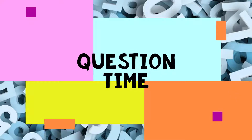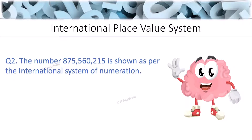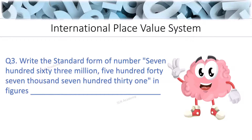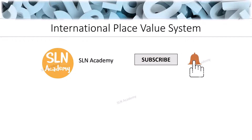Now it's question time. Question 1: The number 763,457,731 is shown as per the international system of numeration — state true or false. Question 2: The number 875,560,215 is shown as per the international system of numeration — state true or false. Question 3: Write the standard form of the number 763,547,731 in figures. Write your answers in the comment section below and hit the like and subscribe button if you haven't yet.